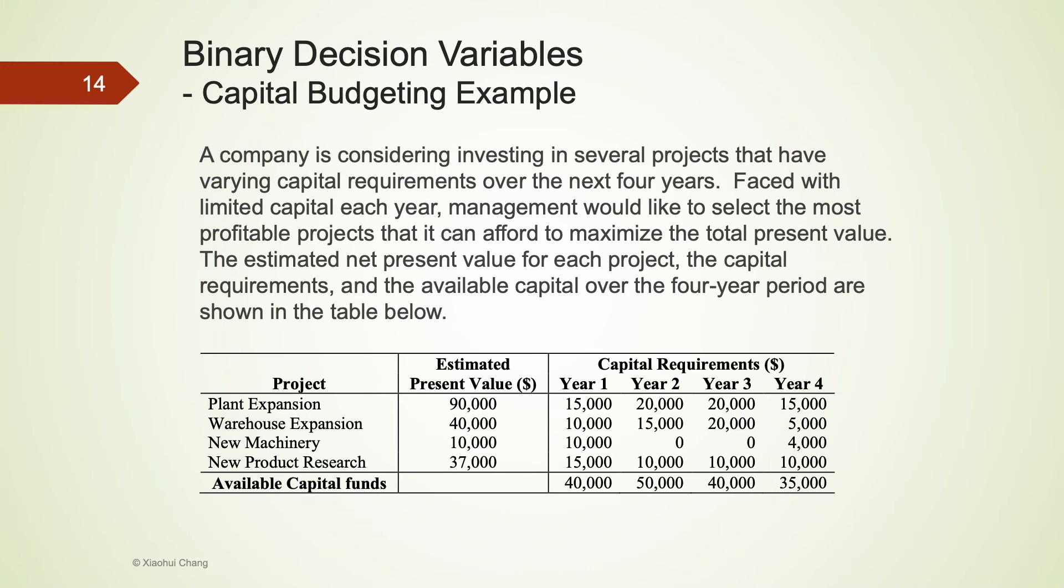The example we will consider here is a capital budgeting example. This company is considering four projects that have different capital requirements over the next four years. Because the company has limited capital each year, as you can see in the table, the management would like to choose the most profitable projects that they can afford to maximize the total present value. The estimated present value of each project, the capital requirements, and the available capital funds are all given in this table. Please pause the video here to see whether you are able to identify the decision variables, the objective function, and the constraints.